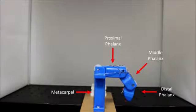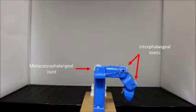The metacarpal, proximal phalanx, middle phalanx, and distal phalanx. These bones are linked by three joints: the metacarpophalangeal joint and two interphalangeal joints.